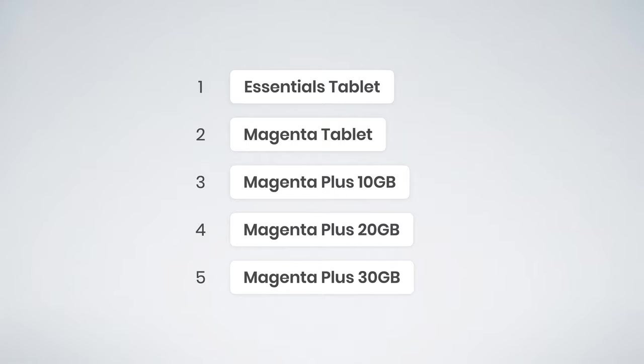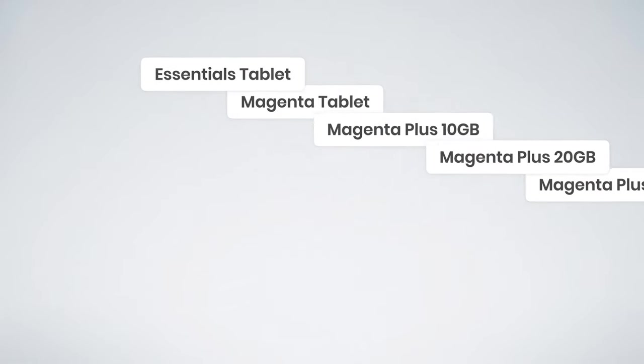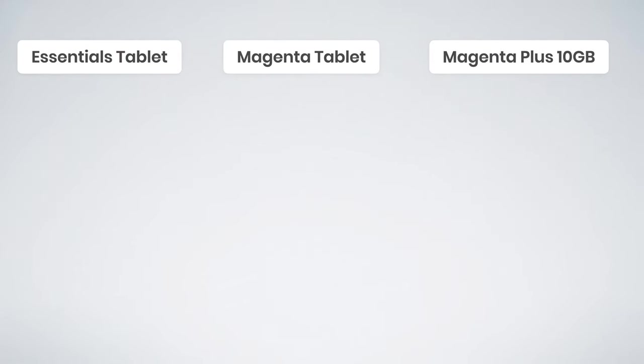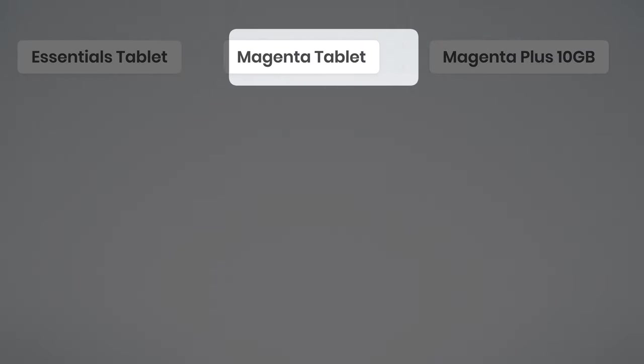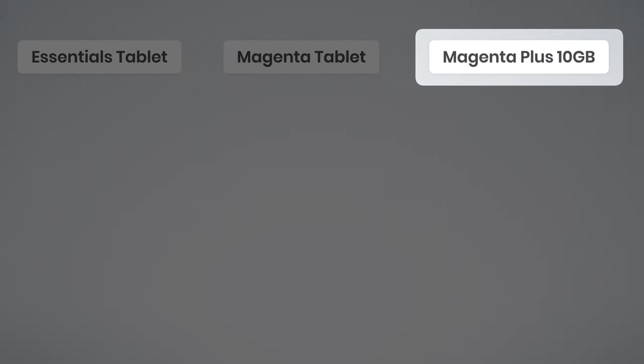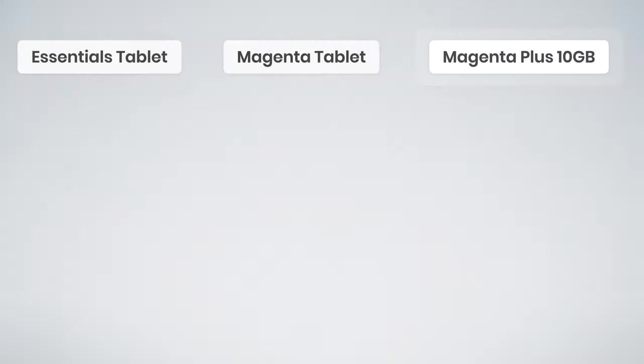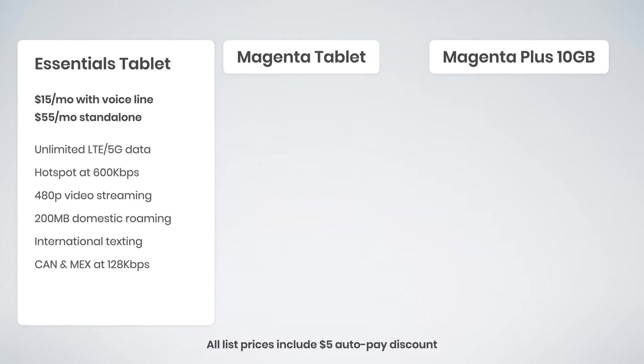There are five options, and the three main options that most people are going to be considering are Essentials for Tablets, Magenta for Tablets, and Magenta Plus for Tablets with 10 gigs of hotspot data. Expanding these: